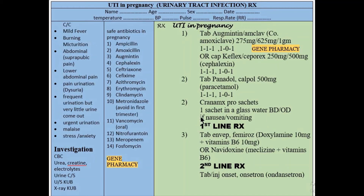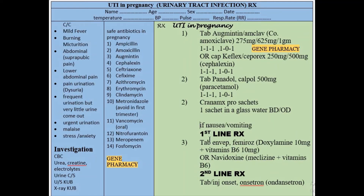If some patients feel they have nausea or vomiting, then you have a first-line treatment available in the market: tablets like Diclectin, Emovit, Femurose — these contain Doxylamine plus Vitamin B6, 10 mg available. If you have nausea, you can also use Cranmax Pro sachet along with neurological options and Metoclopramide.